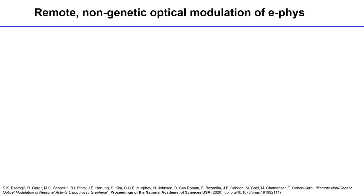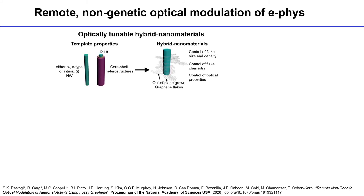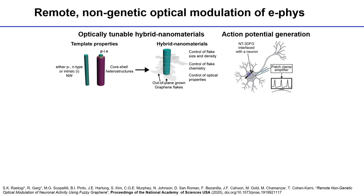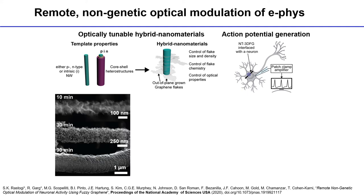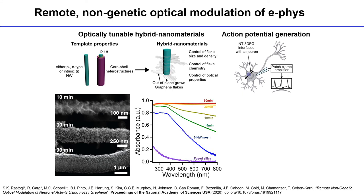Here is our approach for remote, non-genetic optical modulation of electrophysiology. We generate a library of optically tunable materials by controlling the properties of a core made of silicon nanowires and a shell made of graphene flakes. We can control the density, size, and chemistry of these flakes. We use a single wire attached to dorsal root ganglia, shine pulses of laser, and modulate the electrophysiology of these cells.